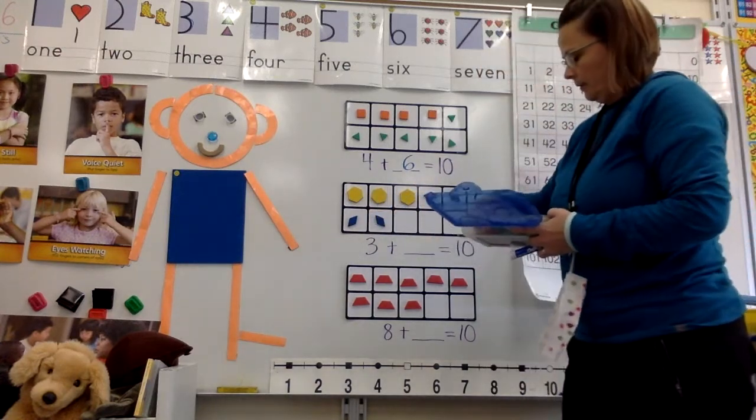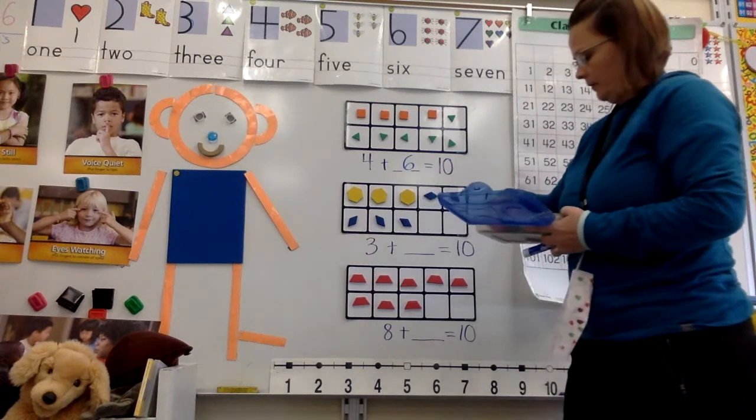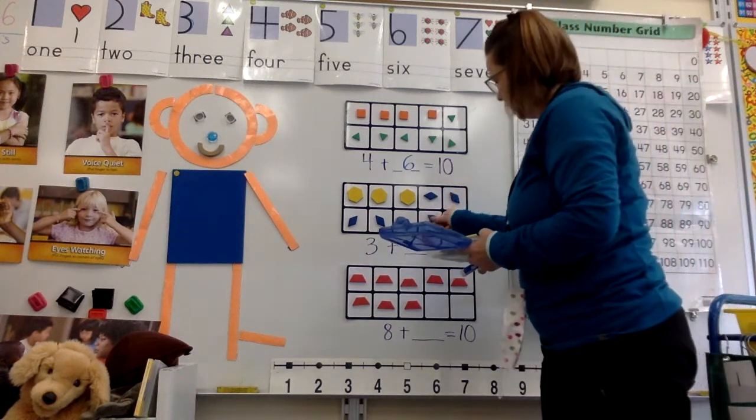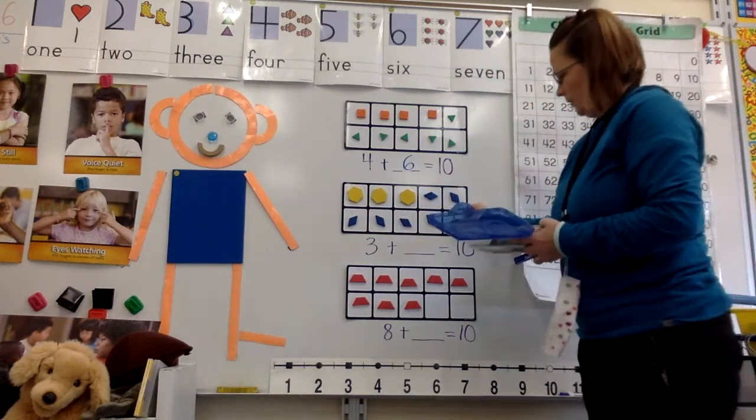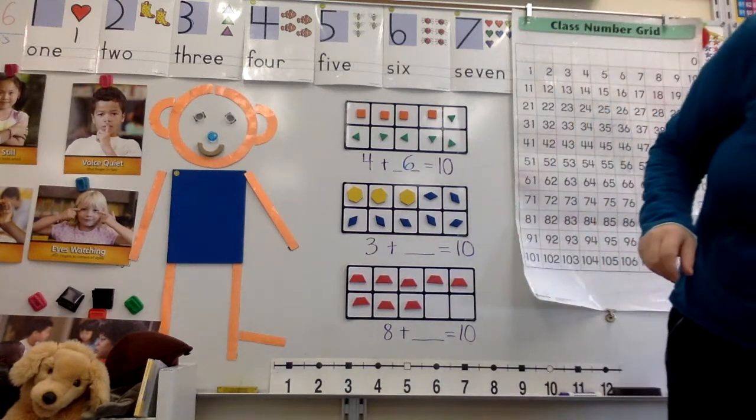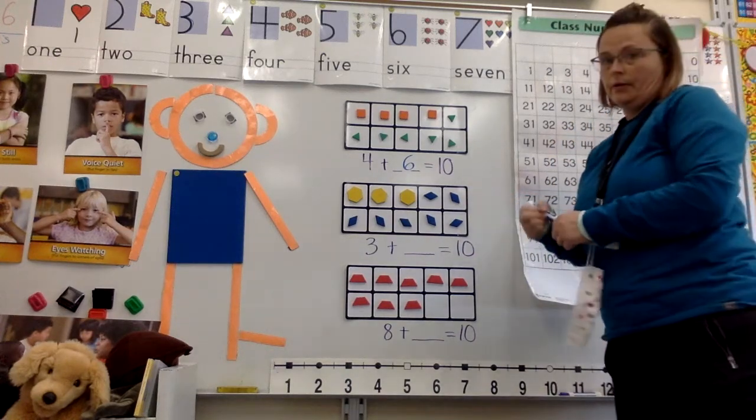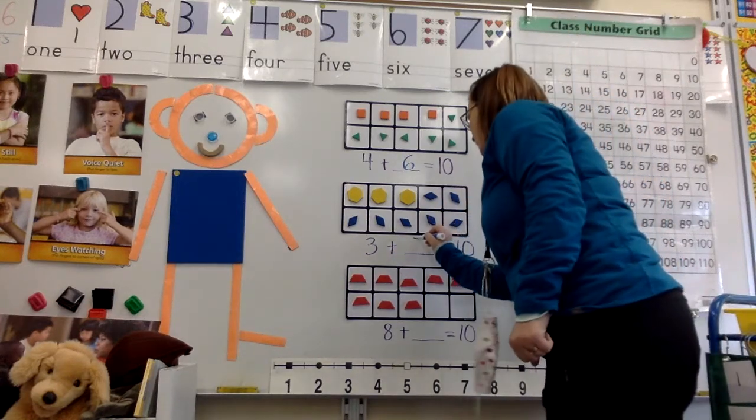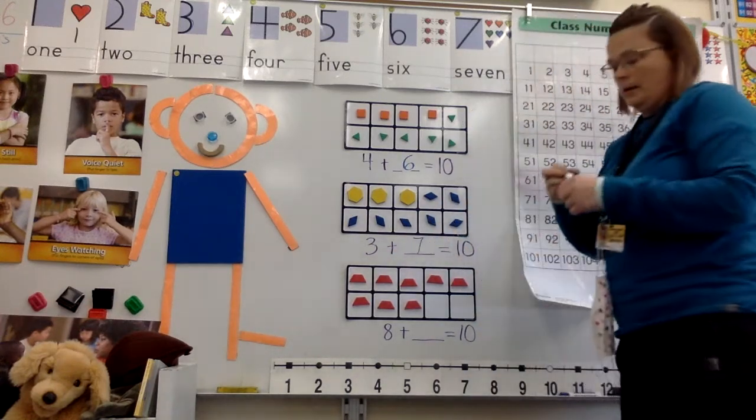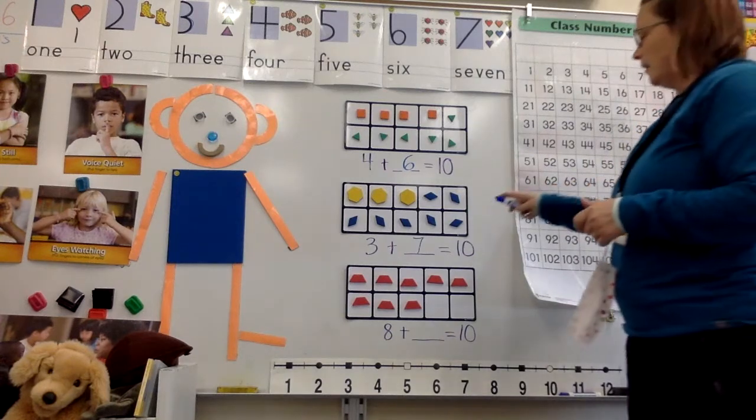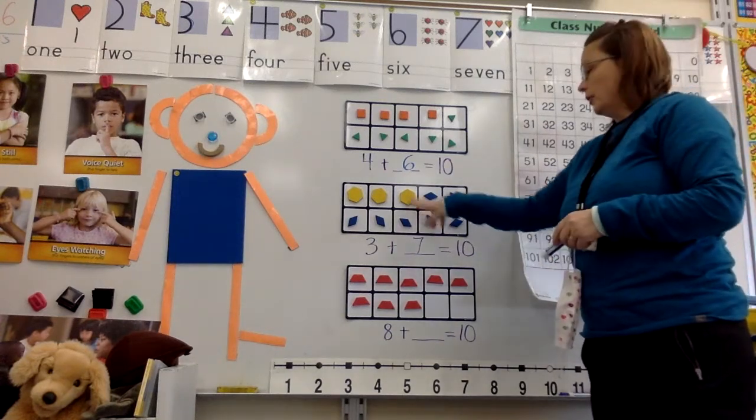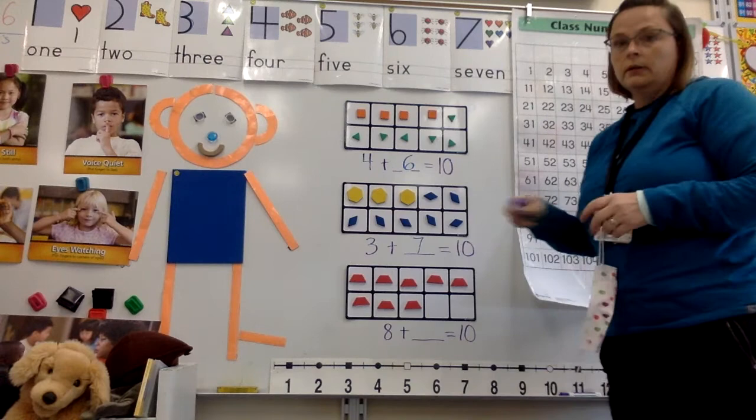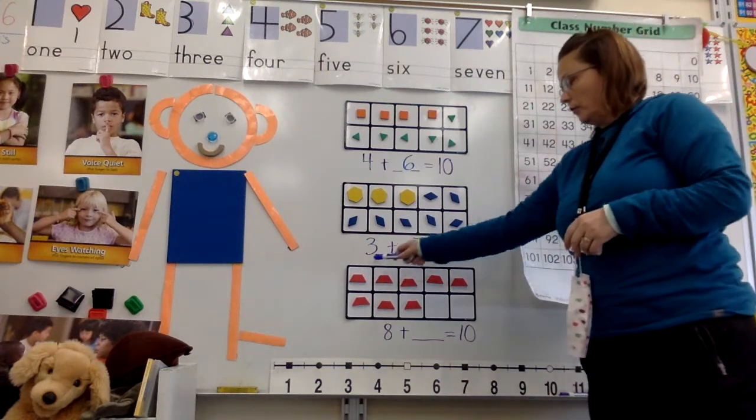There's one, there's two, there's three, there's four, there's five, there's six, and there's seven. So I have seven counters there. I have seven rhombuses. So three plus seven equals ten.